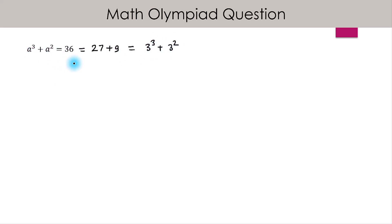By inspecting this equation, we know that a = 3 is a solution of this cubic equation. Now we can write this equation as a³ + a² - 36 = 0.